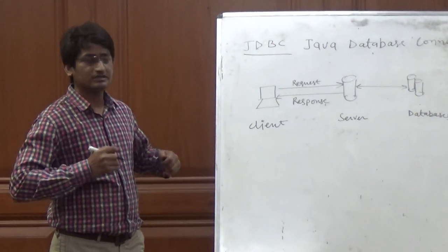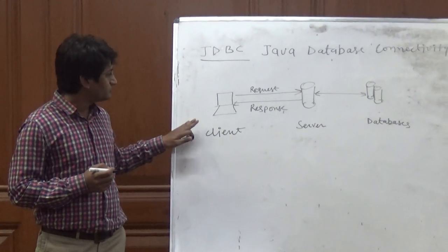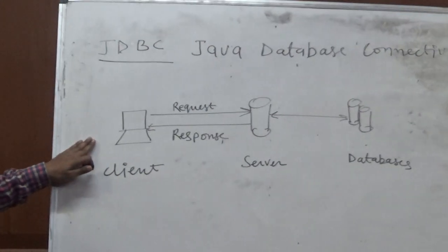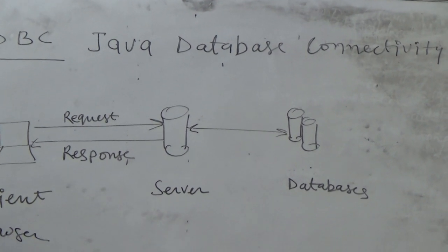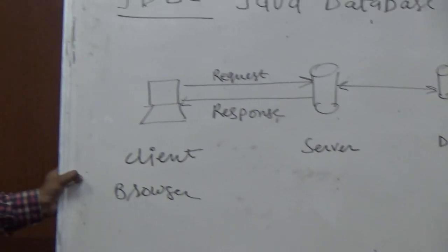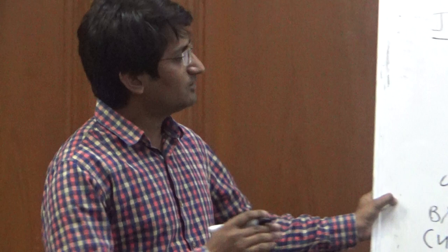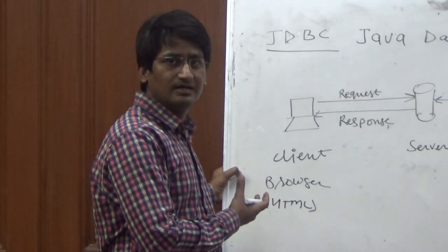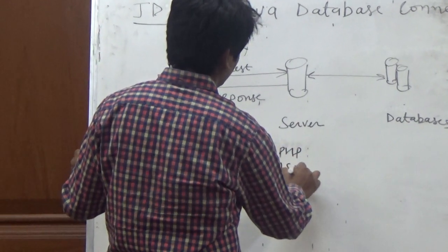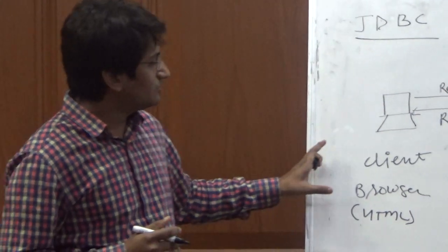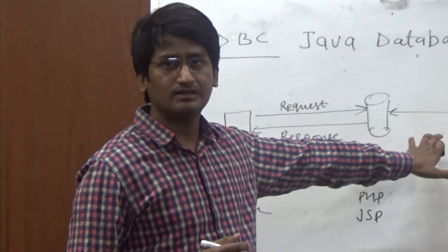We are going to discuss Java Database Connectivity. We have a client-server architecture in which we connect the server with the client. On the client side we have browsers running Java programs structured with HTML code, since browsers only understand HTML. On the server side we may have PHP, JSP, Python, or any other language, along with a database stored on the server.